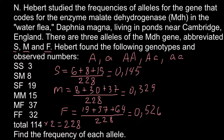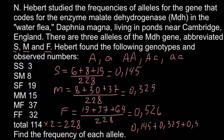Now we can check our solution by adding all the frequencies together. The frequency of S is 0.145, plus the frequency of M which is 0.329, plus the frequency of F which is 0.526. Adding all these numbers together, we get 1, so our solution is correct.